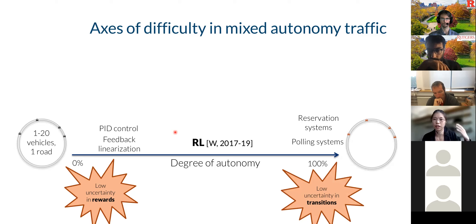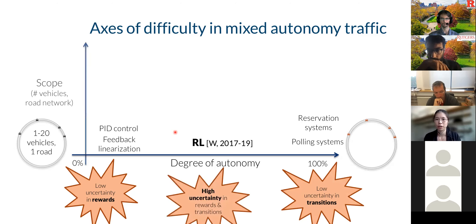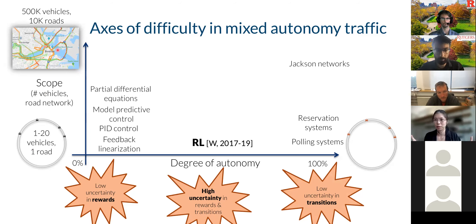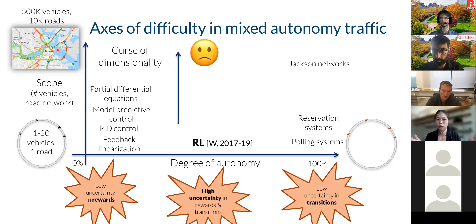This talk is focused on the second axis of difficulty, which I'll call scope. This has to do with the number of vehicles in the network, the size of the road network, and the number of types of vehicles. There's a huge range in scope from a ring road setting to some city. We have techniques from dynamical systems and control, but as we go up this axis, we suffer from the curse of dimensionality. My question is: to what extent can reinforcement learning continue to contribute in this problem space?